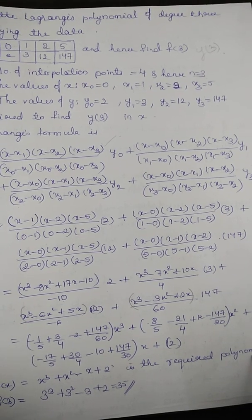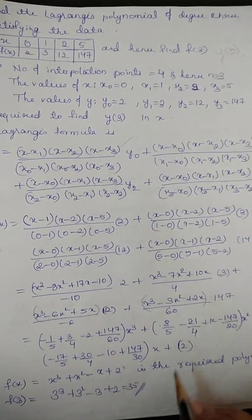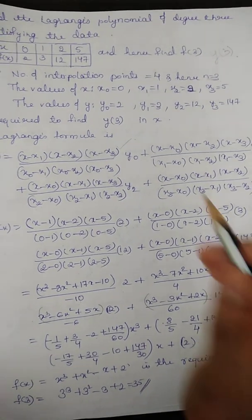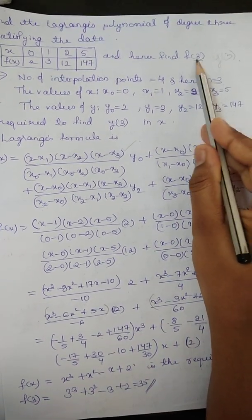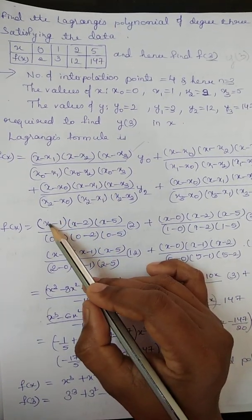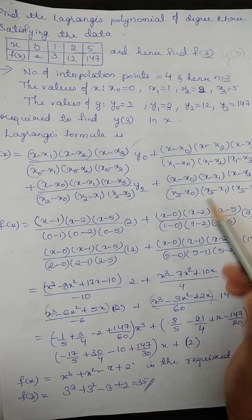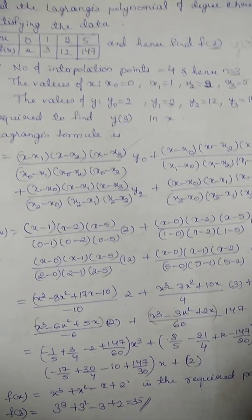At x equal to 3, go on substituting x equal to 3. We will get 35. So, this is one way, or directly you can put the value at x equal to 3. Here, 3 minus 1, 3 minus 2, 3 minus 5. Here also 3 minus 0, and go on substituting. So, that way also you can solve.